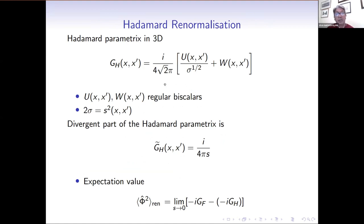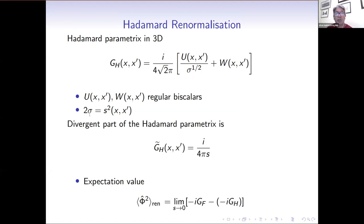The Hadamard parametrix in three dimensions is given here — different from the four-dimensional one in Peter's talk, because in three dimensions there's no logarithmic term. U and W are biscalars which are regular in the coincidence limit, and sigma is Synge's world function, which is half the square of the geodesic distance between the two spacetime points. The divergent part of the Hadamard parametrix is i over 4 pi s. With this we can determine the expectation value of the square of the field by subtracting the divergent Hadamard part from the Feynman Green's function and taking the coincidence limit.